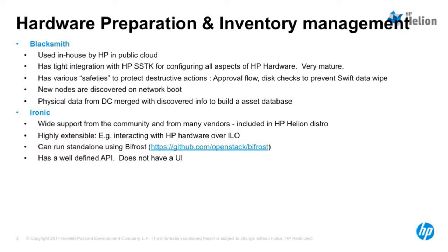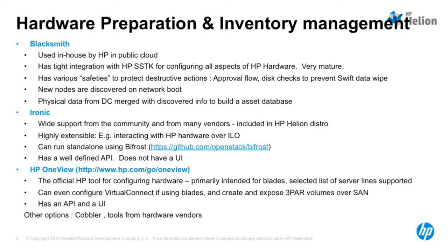Then there's Ironic — a core OpenStack service included in our Helion distro. It's highly extensible, can be run standalone, and has a well-defined API and UI, so it's highly recommended for hardware prep. We also have HP OneView, the de-facto tool recommended by HP especially for configuring blade hardware. It can do your network configuration using Virtual Connect if you're using blades, has 3PAR and storage and SAN support, and comes with an API and a UI. The point is you will need at least one tool from this category before you go ahead with your OpenStack install.